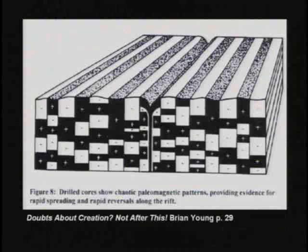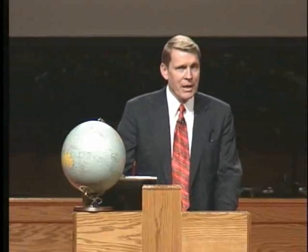The earth has lost 10% of its magnetic strength in the last 150 years and 40% in the last 1,000 years — overwhelming evidence that the magnetic field is getting weaker. If you go back in time about 25,000 years, the magnetic strength would have been too great for life to exist because of the heat generated. So evolutionists say it must be going through reversals — but it has never been observed to reverse; it's only been observed to decline.